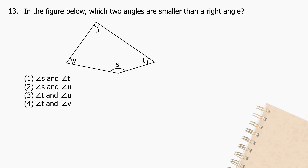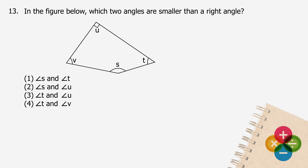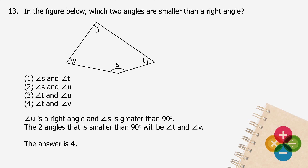Question 13: In the figure below, which two angles are smaller than a right angle? Angle U is a right angle and angle S is greater than 90 degrees. The two angles smaller than 90 degrees are angle T and angle V. The answer is 4.